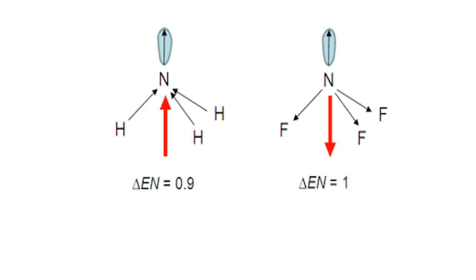Consider another example: ammonia (NH₃). Nitrogen is more electronegative than hydrogen. As a result, three dipole moments act at a particular angle, and the net direction of the resultant dipole is upward — towards the nitrogen. Hence, the NH₃ molecule has a net dipole moment.